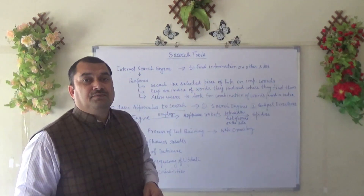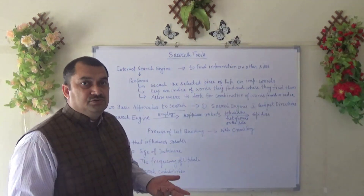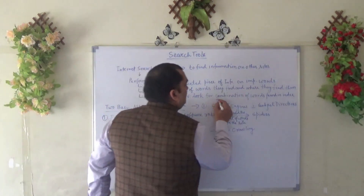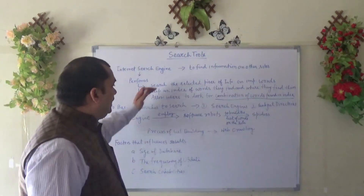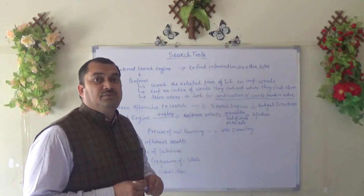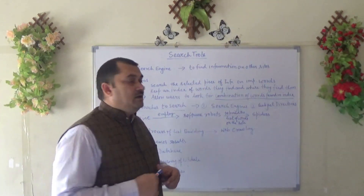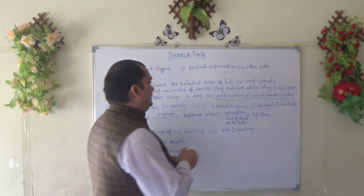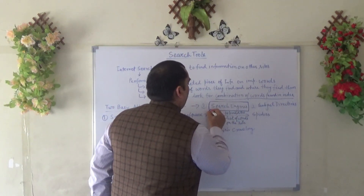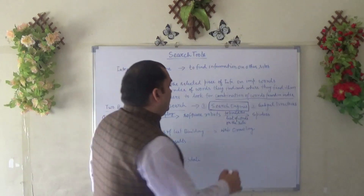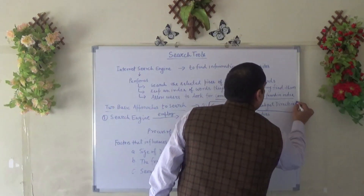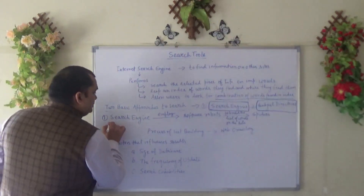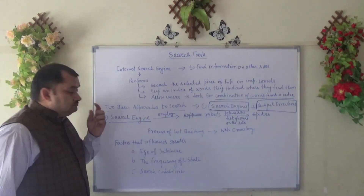After collecting information from different websites, it allows the user to look for a combination of words found in the index. As a user searching for something, I get information and a combination of words which is already indexed, giving me relevant results based on the keywords I provided. Basically there are two basic approaches to search: the first is the search engine, and the second is subject directories.